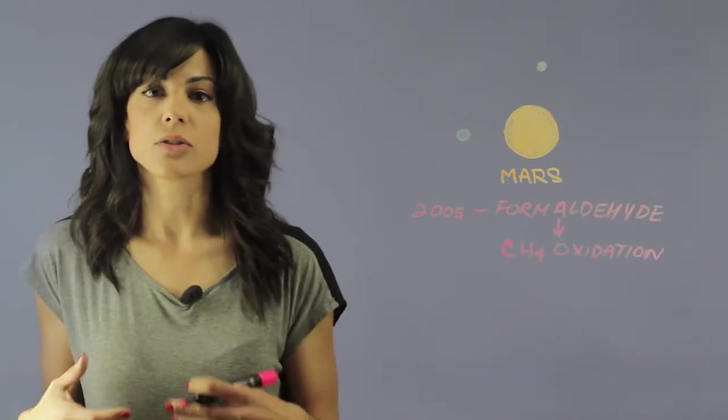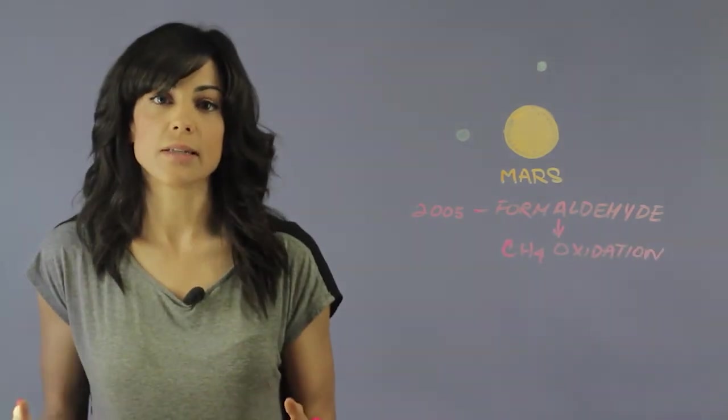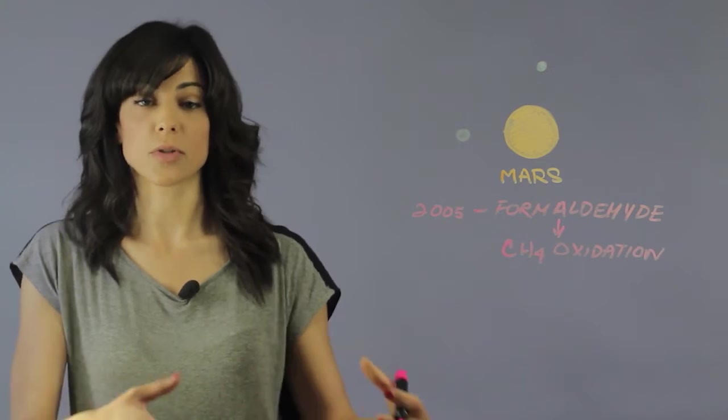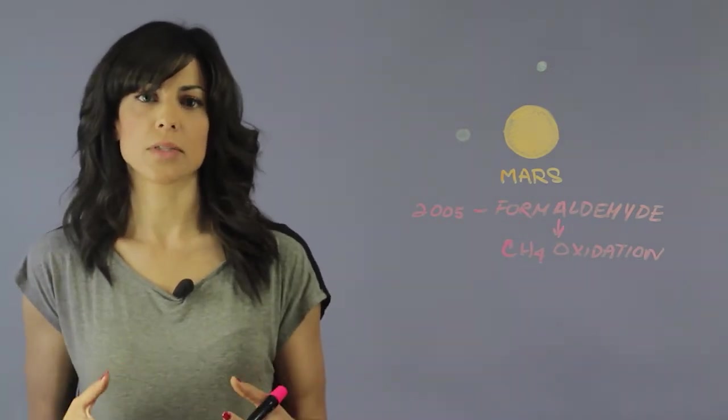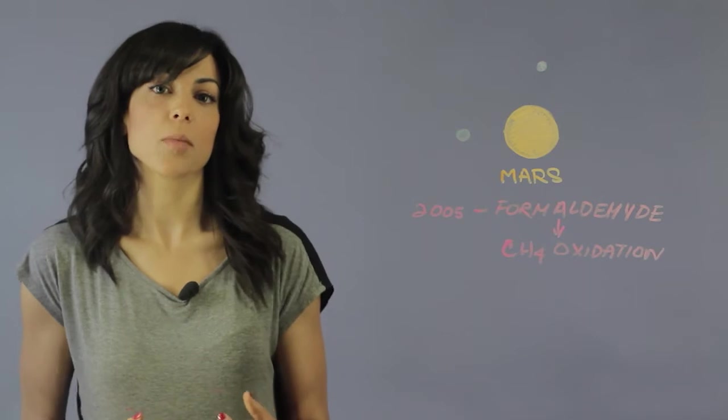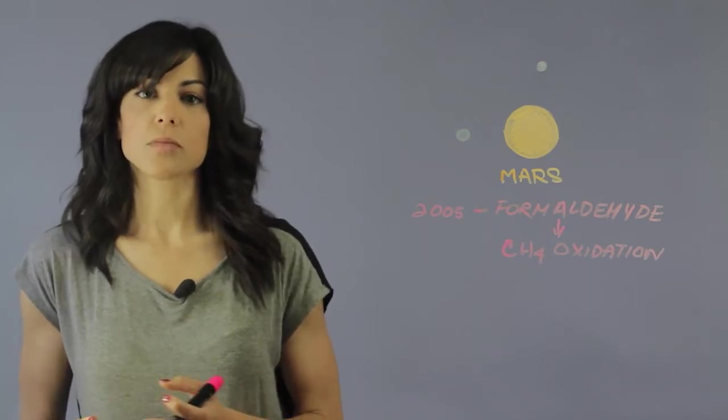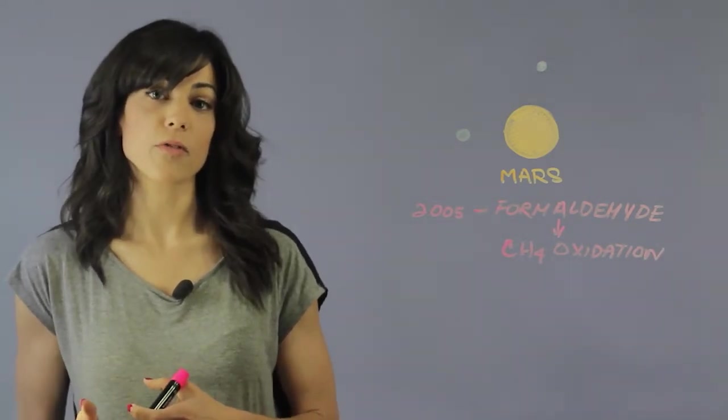Now, we saw a certain amount of methane abundance and then we saw a very large percentage of formaldehyde. So the problem was, where is this formaldehyde coming from? And there was a lot of assumptions and a lot of debate over where this could have come from.